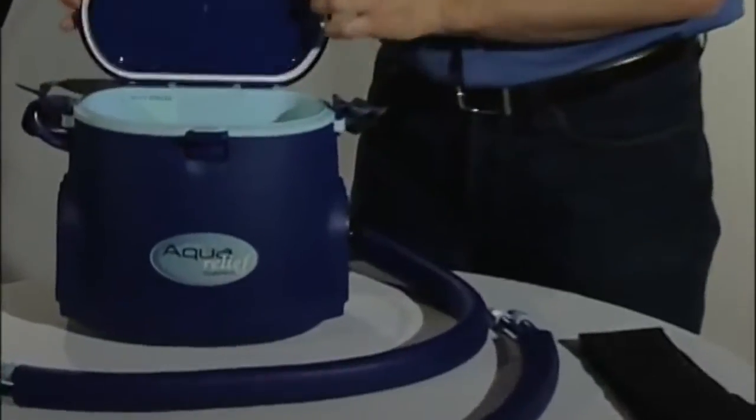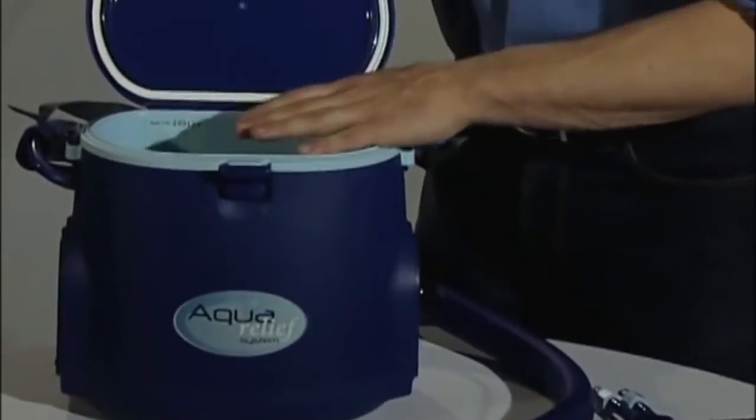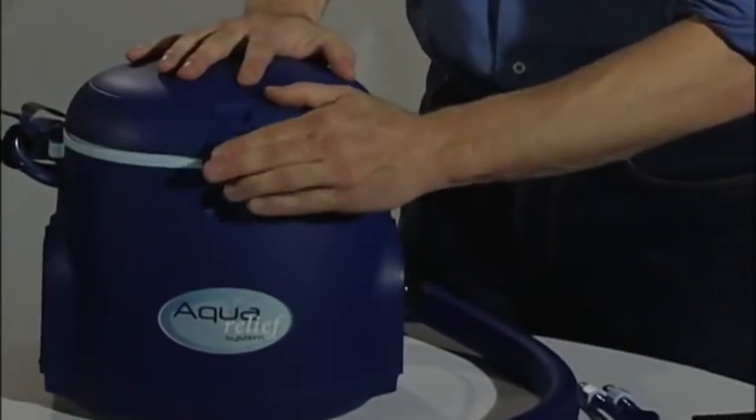To use the ARS you're going to fill your reservoir up with water to the fill line. Once it's filled up you can close your lid and lock your clamp.